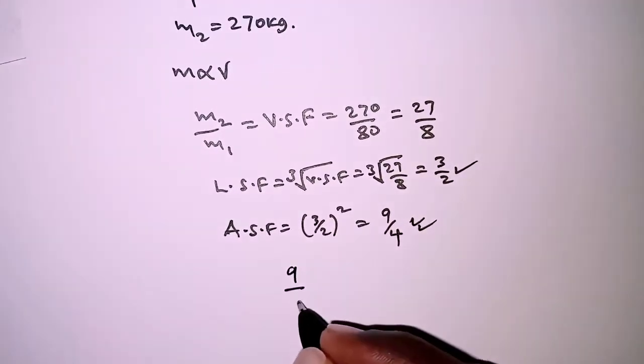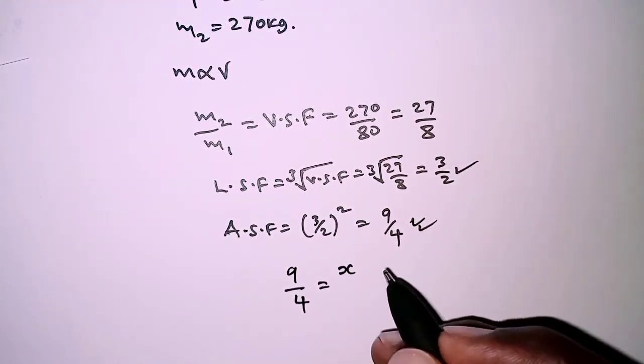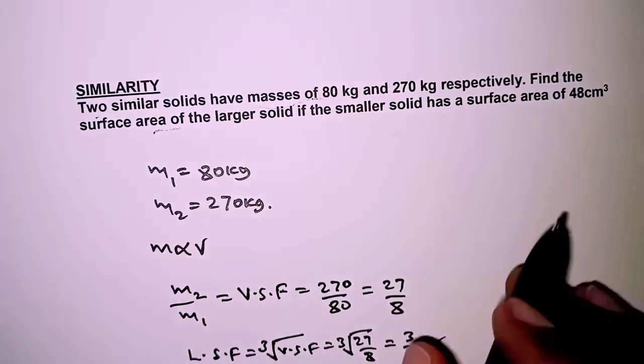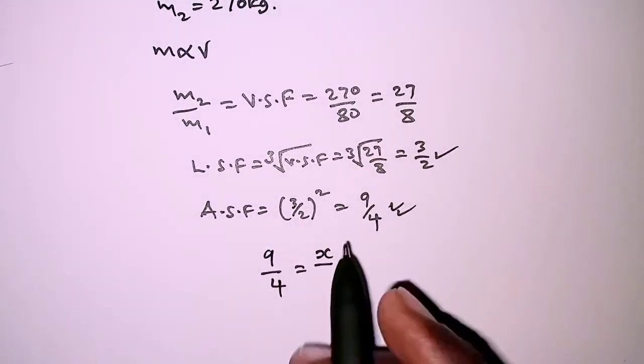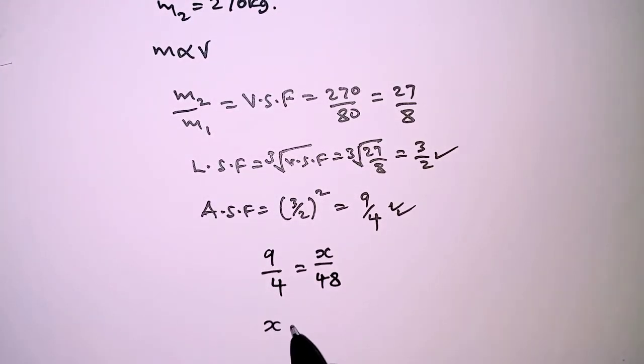So we have 9 over 4 equals x for the larger over the surface area of the smaller one, which is 48. When you cross multiply, we have 9 times 48 over 4.